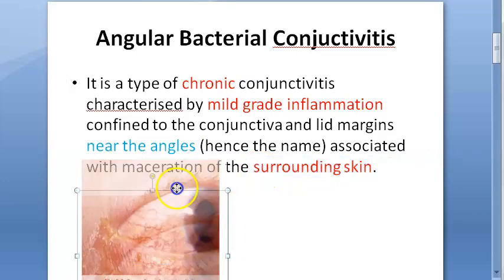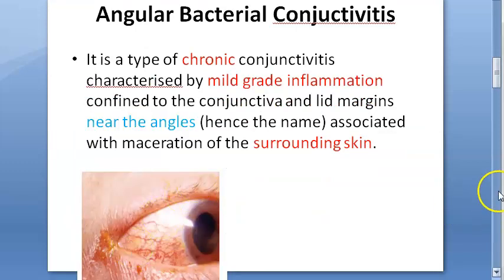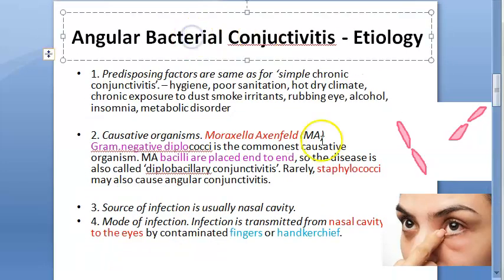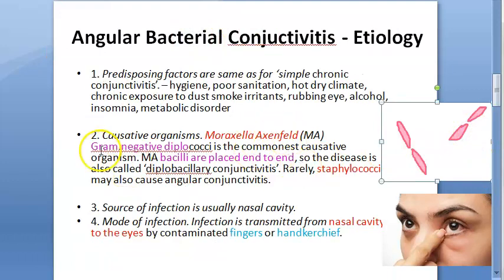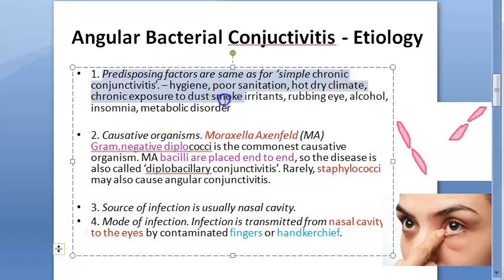There will sometimes be involvement of the surrounding skin around the angle as well. Moraxella axenfeld is the causative organism — gram-negative diplobacilli. Rarely, Staphylococcus can also cause this. Predisposing factors include poor hygiene, exposure to irritants, eye rubbing, insomnia, and metabolic disorders.